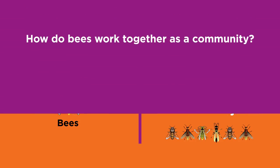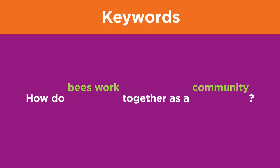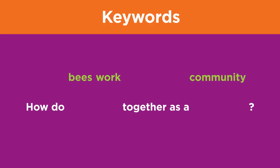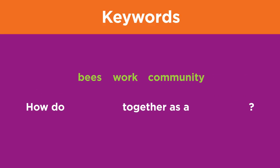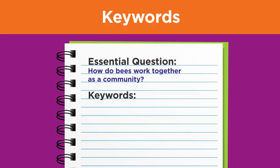Take a look at your question and pick out the words that represent the main ideas: bees, work, and community. These main idea words are your first keywords. Be sure to write down and keep a list of your keywords, which you can add to as you work.